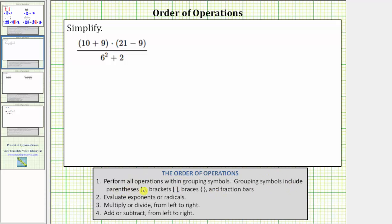Grouping symbols include parentheses, brackets, braces, and fraction bars, which means when we have an expression in fraction form, we treat the expression as if there are parentheses or grouping symbols around the numerator and denominator. We simplify the numerator and denominator separately, and then in the last step, we simplify the fraction.